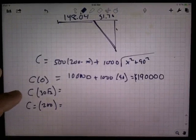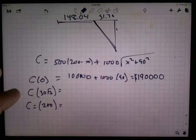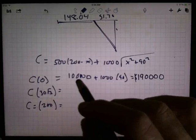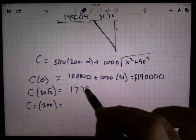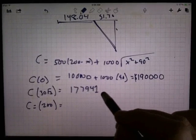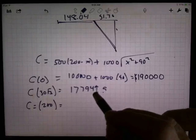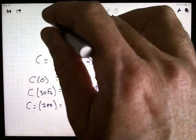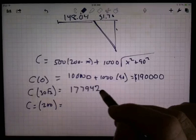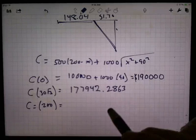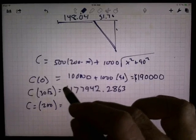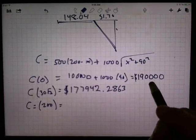When you plug the 30 radical 3 in, you get, I'm quickly doing it on my calculator, I've got 177,942.2863, which is actually less than that. That's 190,000, this is 170,